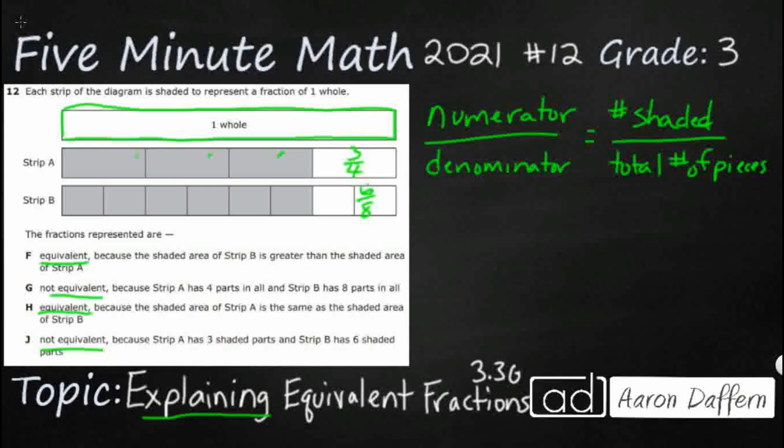Well, you notice that both of these fraction strips start at the same spot, which means we can visually look at them. And they both start at the same spot, and they both end at the exact same spot, which means they are equivalent. So three-fourths is equal to six-eighths.